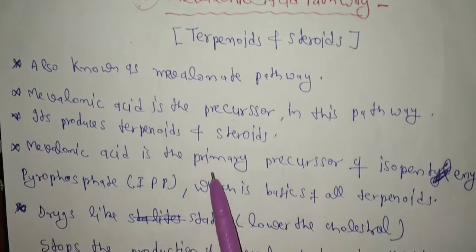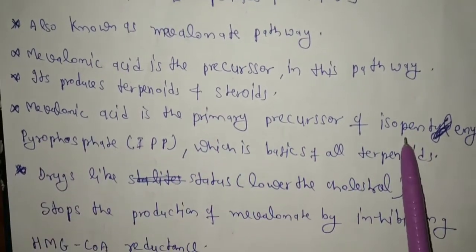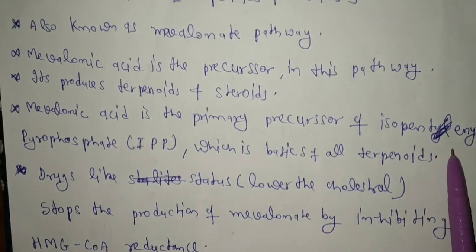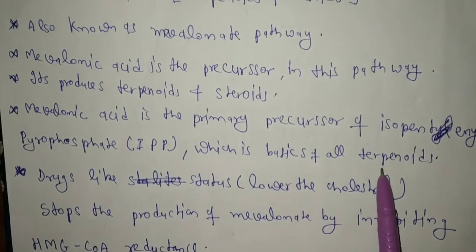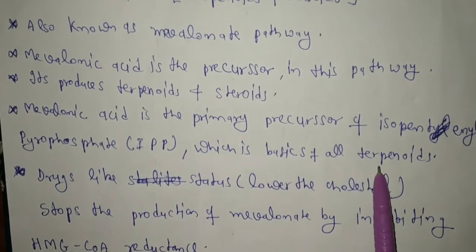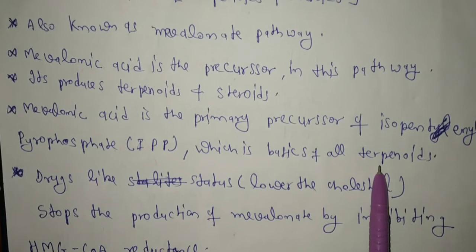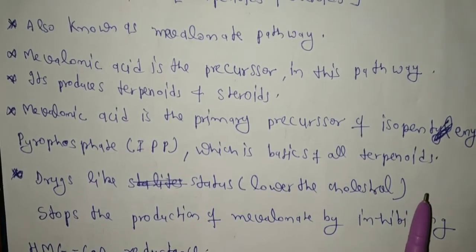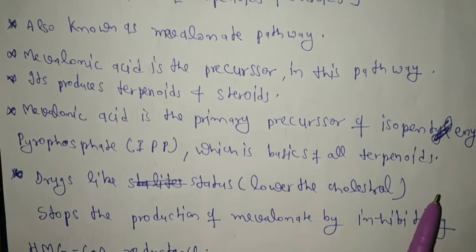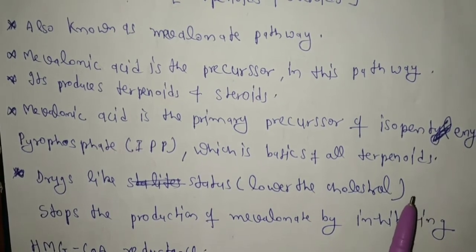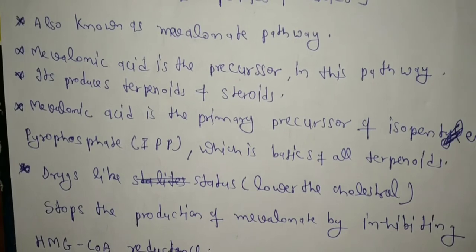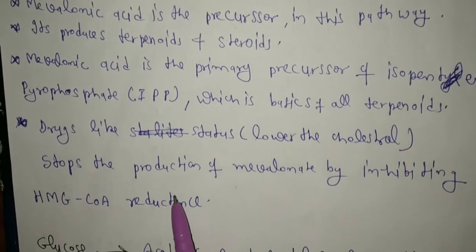Mevalonic acid is the primary precursor of isopentenyl pyrophosphate, which is the basic unit of all terpenoids. In the mevalonic acid pathway, mevalonic acid is the precursor of terpenoids and steroids, and isopentenyl pyrophosphate is the primary precursor that produces the basic unit of terpenoids and steroids.